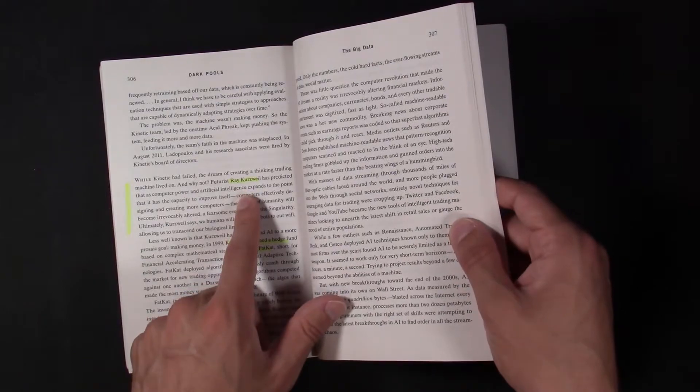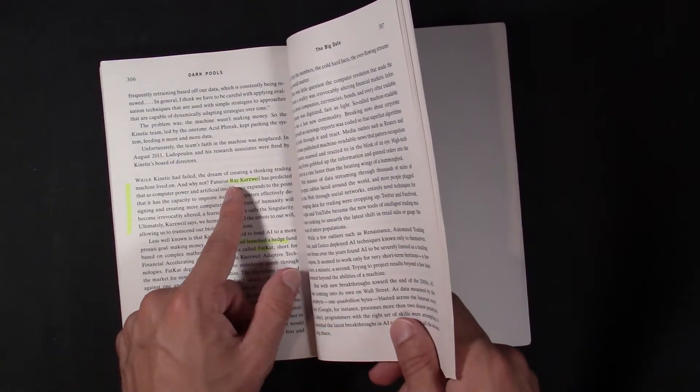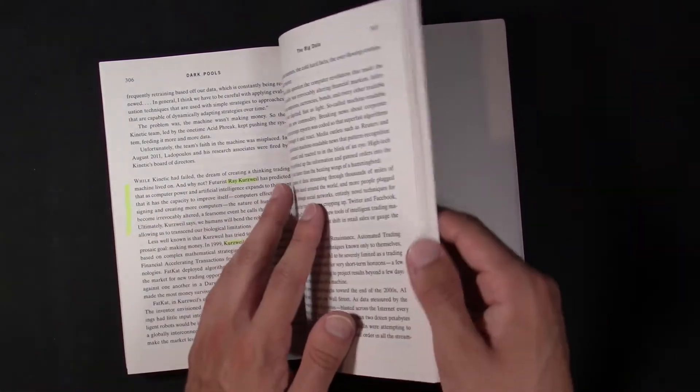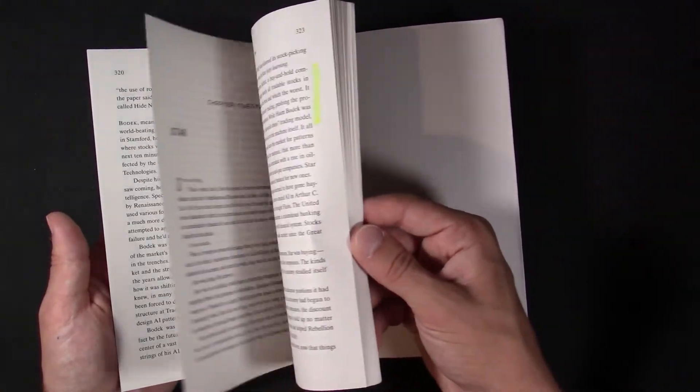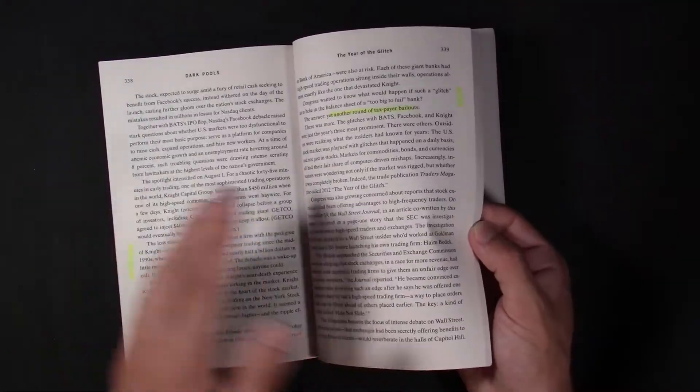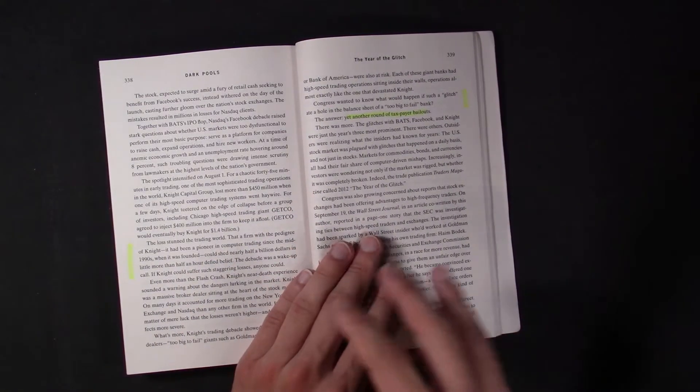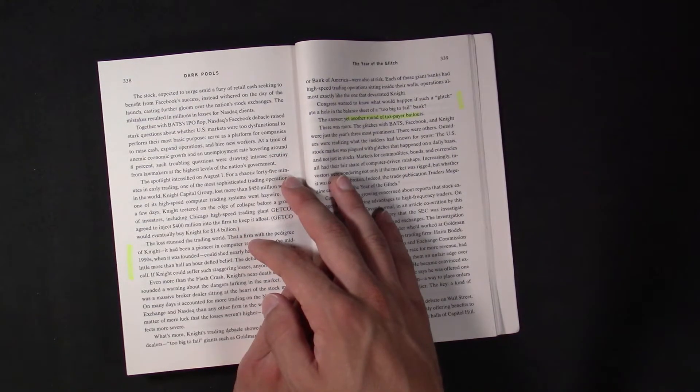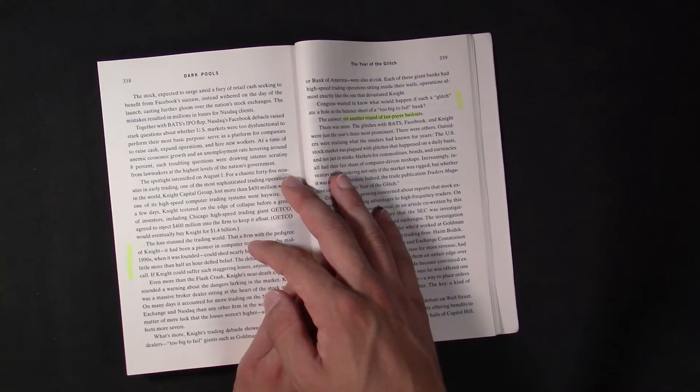He mentions Ray Kurzweil. He wrote a book about the singularities near. I read part of it. It was a very heavy read, and I just was not in the mood of reading it. But basically, it's just the race, AI, singularity, or AI and everything to become one. It's just a matter of time before almost everything becomes, like, even driving, look at it, driving cars have so much intelligence in it. It's incredible right now.